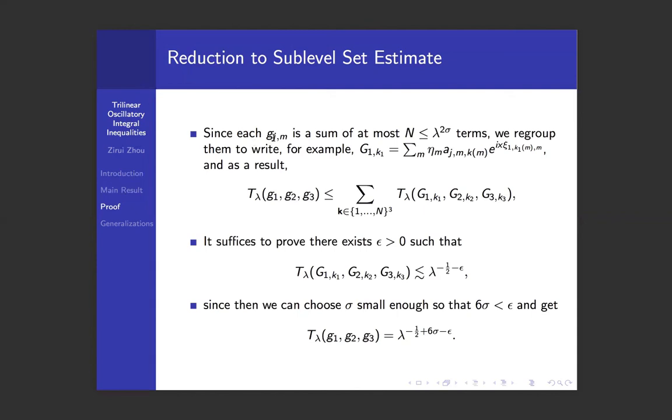For each small g, there are at most big N big G's. So we can write T_λ of small g as a summation of at most λ^(6σ) terms of T_λ of big G. And recall we still have the freedom to choose the σ here. So it suffices to prove that uniformly for all the big G_{i,k_i}, T_λ of big G_{i,k_i} is bounded by λ^(-½-ε) for some ε. Once we choose this ε, we can make the corresponding choice of σ and then the corresponding choice of ρ so that the whole scheme works.